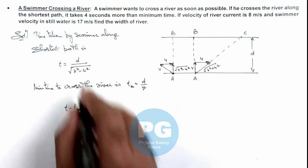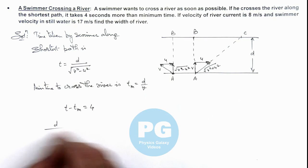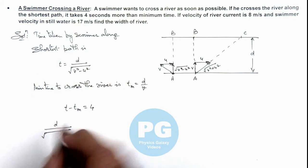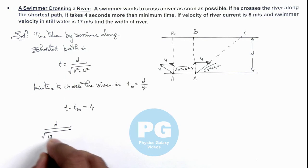So here if we substitute the values, you can see this T is d by root of, here the speed of swimmer in still water is 17, so this is 17 square.